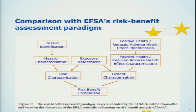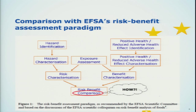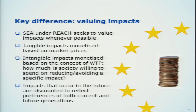If I try to connect this to EFSA's risk-benefit assessment paradigm, as specified in their scientific opinion on that topic: on the left side you have the normal risk characterization part starting with hazard identification, and a similar tree on the right connecting to a risk-benefit comparison. The question is then how to make this comparison. One key difference in how we do it is that we put money on the impacts — we value the impacts — and we consider all the other impacts as well whenever possible.